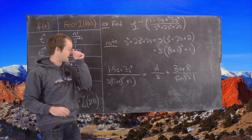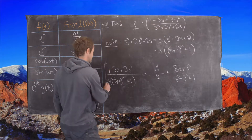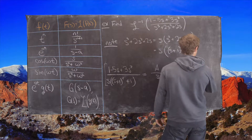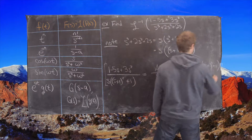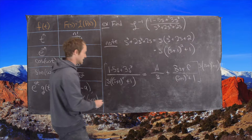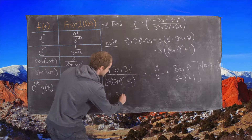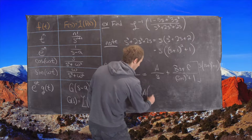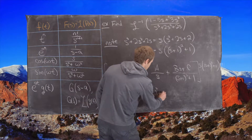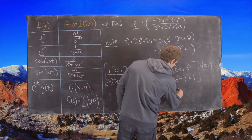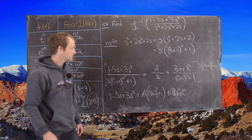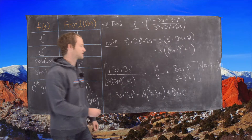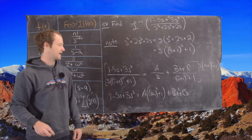The next thing we want to do is clear the denominators by multiplying by s times the quantity s plus 1 squared plus 1. On the left-hand side that leaves us with 1 minus 5s plus 3s squared. On the right-hand side we have A times the quantity s plus 1 squared plus 1, plus Bs squared plus Cs.